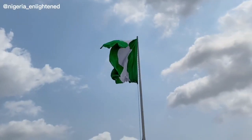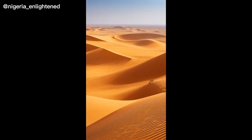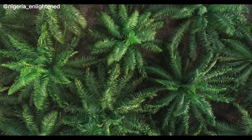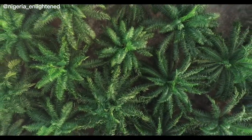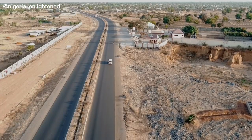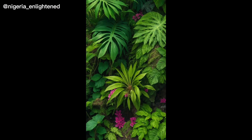Size and topography: Nigeria is the most populous country in Africa, and it covers a total area of around 923,768 square kilometers. The terrain varies from low coastal areas to high plateaus and hills in the center of the country. The northern part is predominantly flat, with sandy soils and few trees, while the southern part is lush and green with tropical rainforest vegetation.